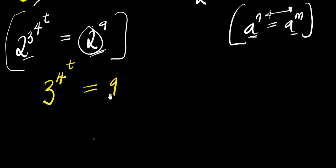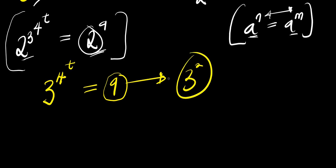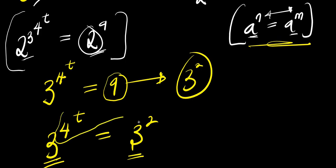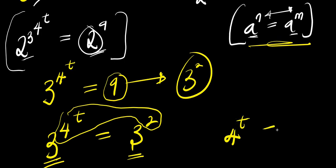We repeat the same steps by replacing 9 with 3 to the power of 2, since 9 is a perfect square. So we now have 3 to the power of 4, to the power of t, equals 3 to the power of 2. Since the two bases are the same, we compare the exponents once again, giving us 4 to the power of t equals 2.